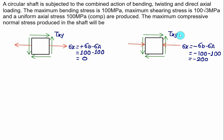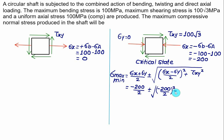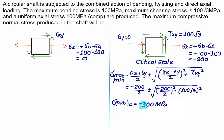With sigma-x equals minus 200 MPa and sigma-y equals 0, we calculate the principal stresses. The maximum compressive stress equals sigma-x plus sigma-y divided by 2 minus the square root of (sigma-x minus sigma-y divided by 2) squared plus tau-xy squared. Substituting: minus 200 divided by 2 minus the square root of (minus 200 divided by 2) squared plus (100 root-3) squared. Taking the negative sign gives the maximum compressive stress as minus 300 MPa.